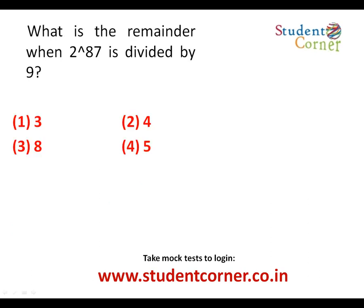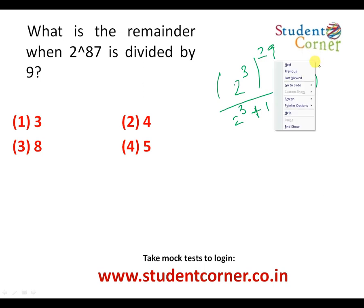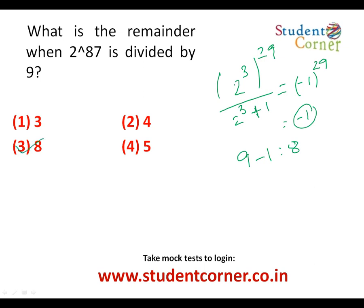The next question: what is the remainder when 2 to the power of 87 is divided by 9? We can write 2^87 as (2³)^29 = 8^29. Using the polynomial remainder theorem, when divided by (x + a), the remainder is f(−a). Here 8 = 9 − 1, so we substitute −1: (−1)^29 = −1. Since a remainder cannot be negative, we add the divisor: 9 − 1 = 8. Therefore the remainder is 8.